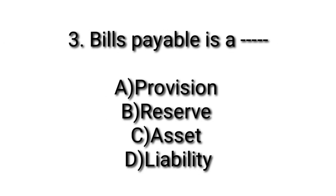Bills payable is a Dash. Options: Provisions, Reserve, Assets, Liability. Answer option D: Liability. Bills payable is a Liability.